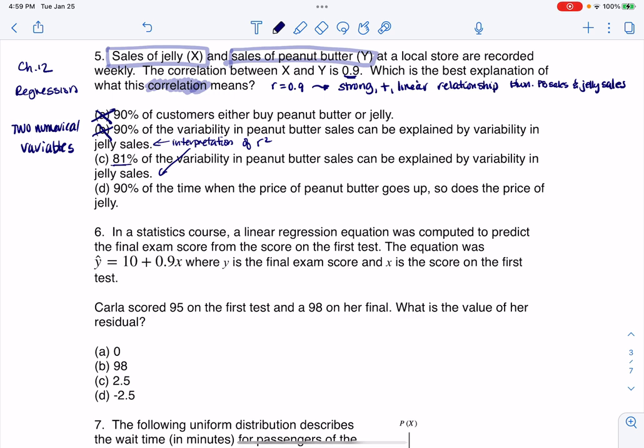So I can't rule that one out until I actually calculate our particular r-squared value. But let me see what D says. 90% of the time when the price of peanut butter goes up, so does the price of jelly. So no. It's leading me to believe that C is correct, but let's just double check.